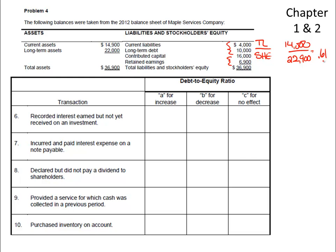We record interest earned but not yet received on an investment. This means we increase interest receivable, which is a current asset account, and we increase revenue. If we increase revenue, that in turn increases shareholders' equity because we retain the net income in the business. So if shareholders' equity is increasing, the debt-to-equity ratio will go down.